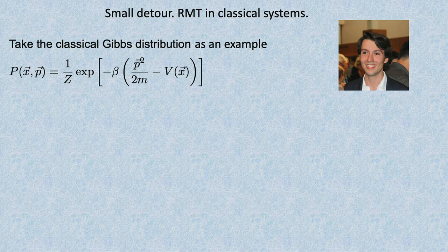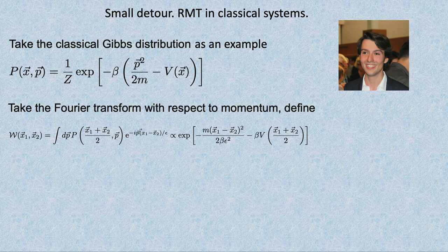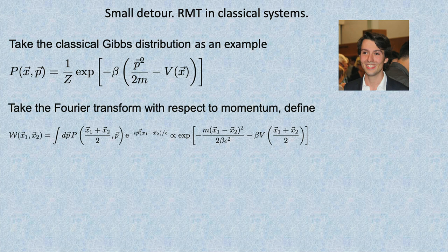Let's assume we have some stationary distribution — say a Gibbs sample for simplicity, but it could be anything. I can do a Fourier transform — it's like an inverse Weyl transform with respect to momentum. The conjugate to momentum I'll call a coordinate, specifically relative coordinates x1 and x2, where x equals (x1 + x2)/2. I introduce some epsilon, which in quantum mechanics is ℏ, but here I just have epsilon. I get a function of two coordinates x1 and x2, which could be vector coordinates with many particles.